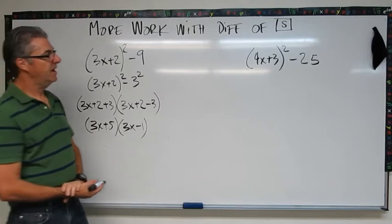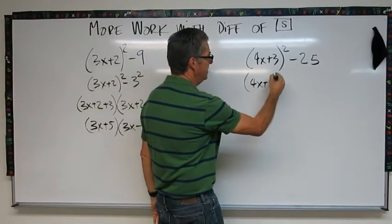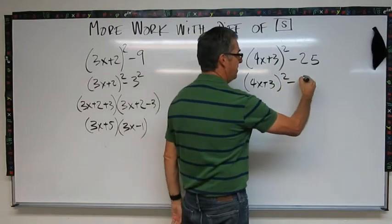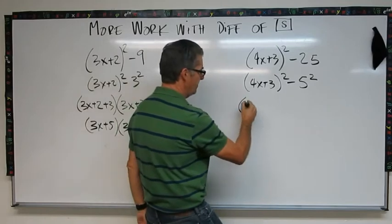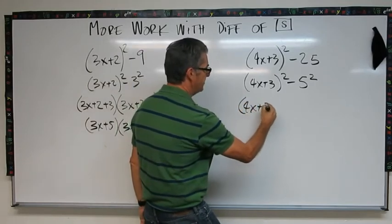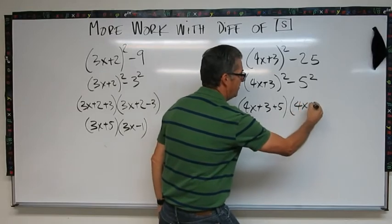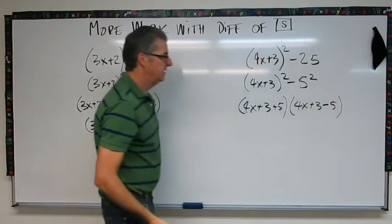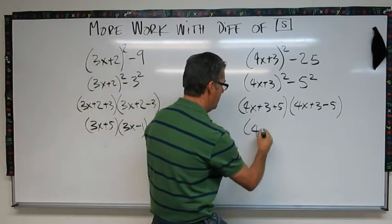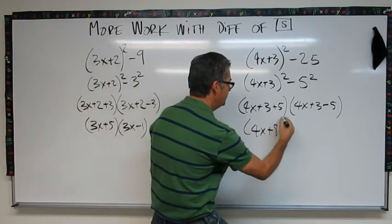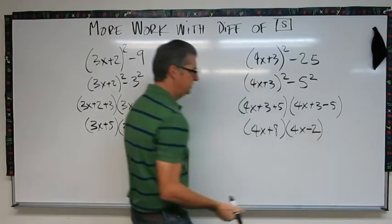Okay, let's see how you did. This is going to be (4x+3) squared minus 5 squared, right? 25 is 5 squared. Now we do it: the first one is going to be 4x plus 3 plus 5, times 4x plus 3 minus 5. Okay, last step: I'm going to combine my numbers, 4x plus 8 times 4x minus 2.